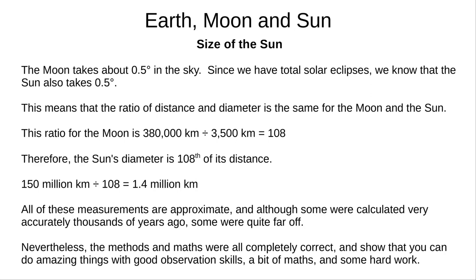We know what that is for the moon. 380,000 kilometers, that's the distance, divided by 3,500 kilometers, the diameter. That gives you about 108. So the sun's diameter is one-hundred-eighth of its distance. And 150 million kilometers, divided by 108, gives you the diameter of the sun 1.4 million kilometers.